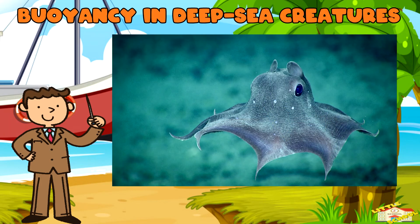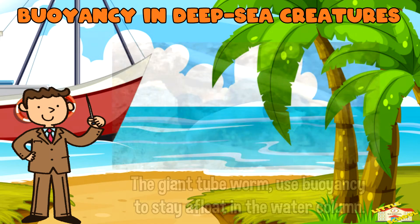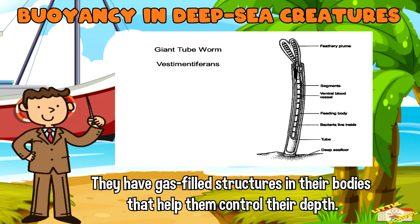Buoyancy in Deep Sea Creatures: Some deep sea creatures, like the giant tube worm, use buoyancy to stay afloat in the water column. They have gas-filled structures in their bodies that help them control their depth.